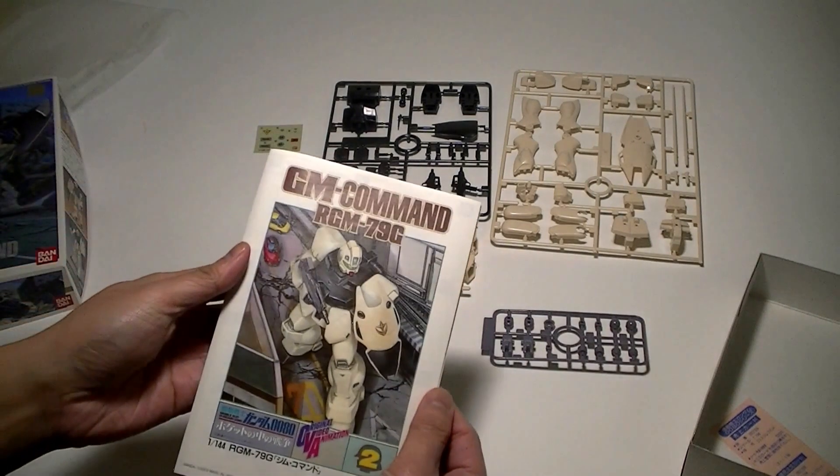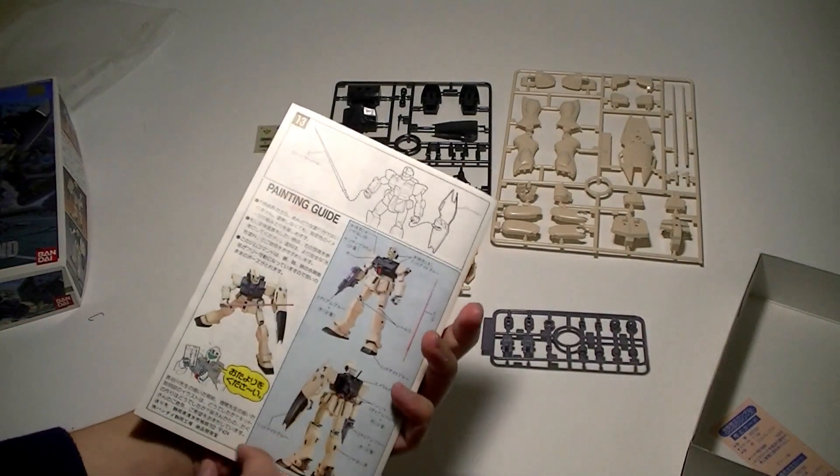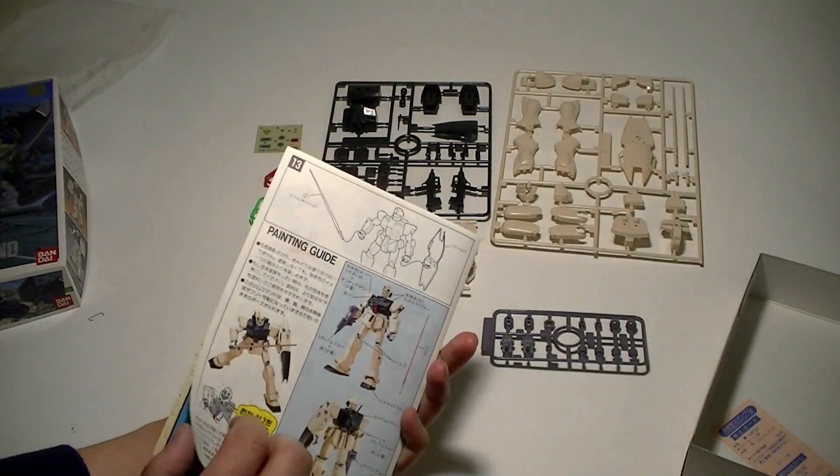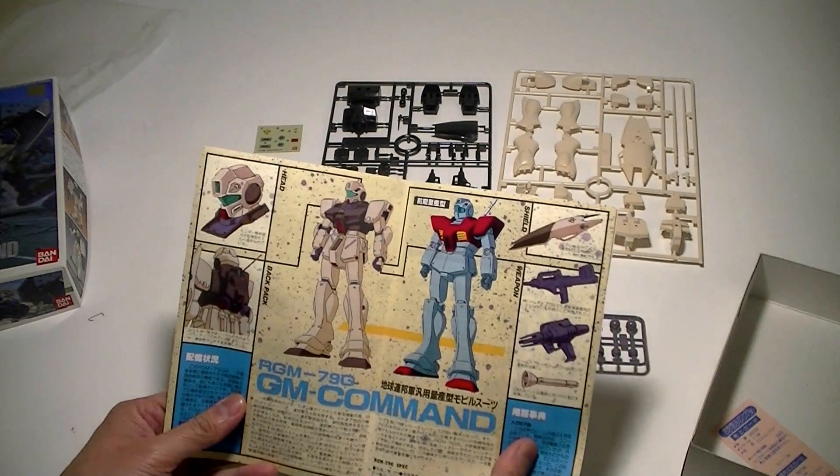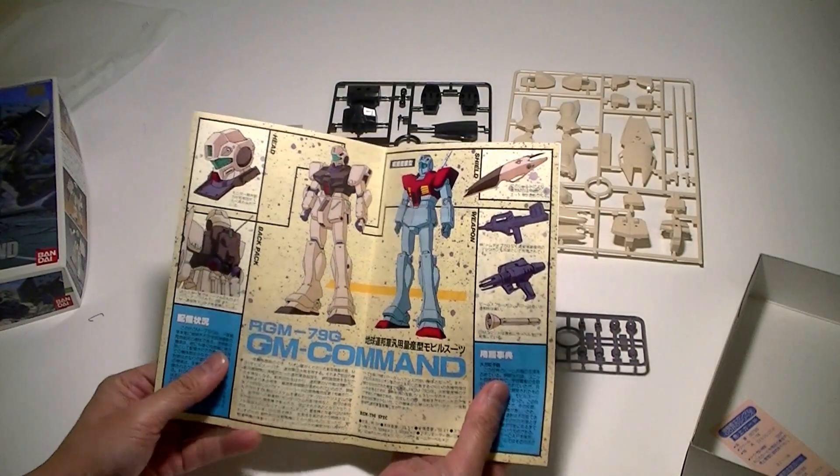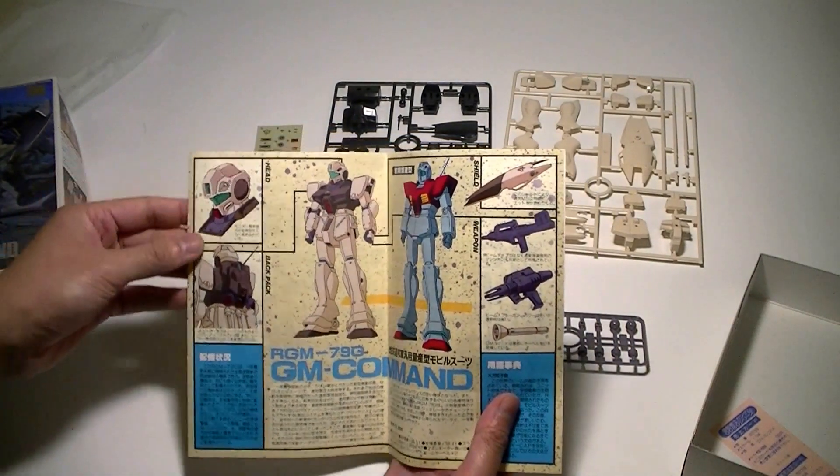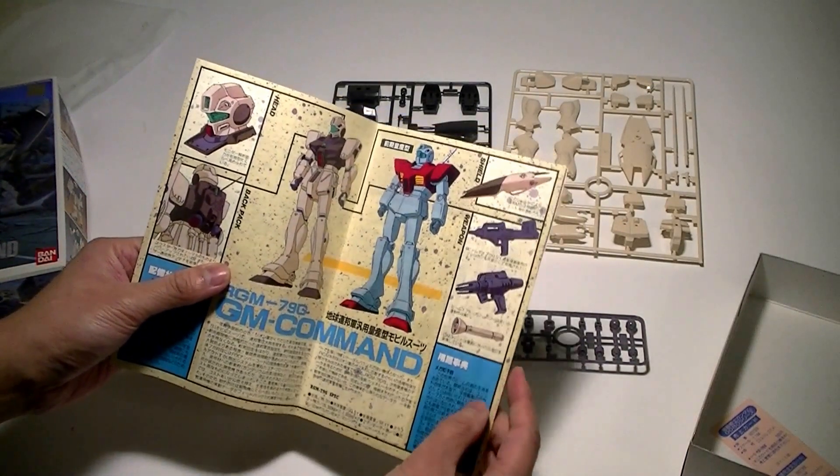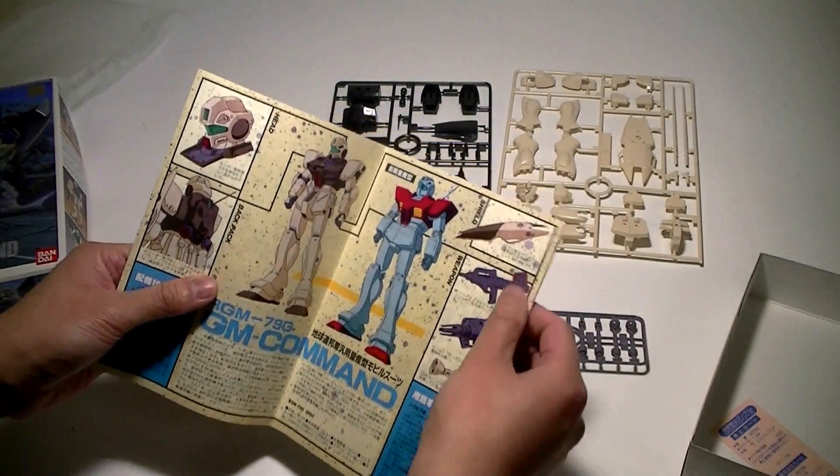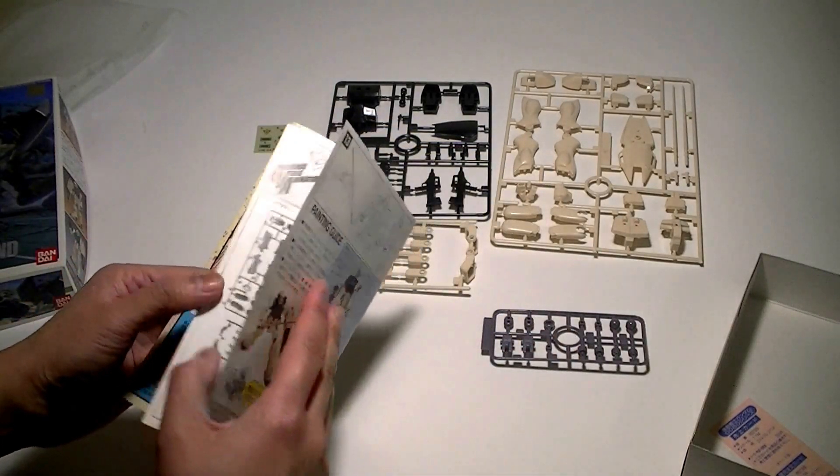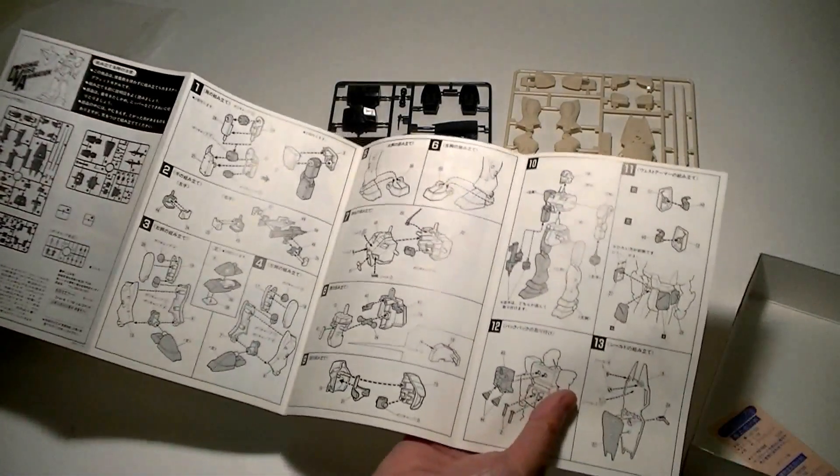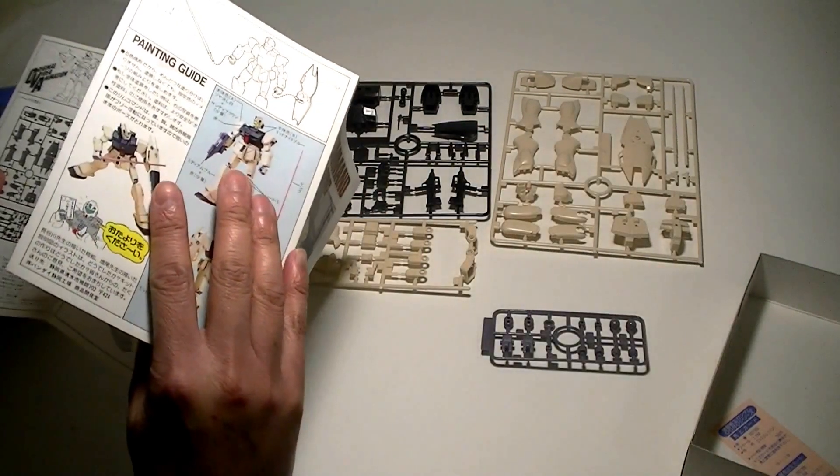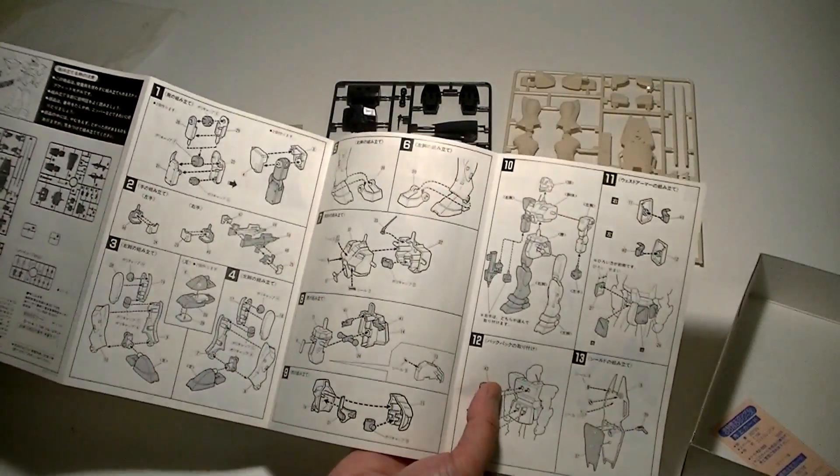Let's go ahead and take a quick look at the instructions. Back of the instructions, there's just a painting guide. Here's art on the inside. Got close-ups of the head and alternate GM design. And of course the accessories. Pretty straightforward, 13 easy steps and you're done with this kit.